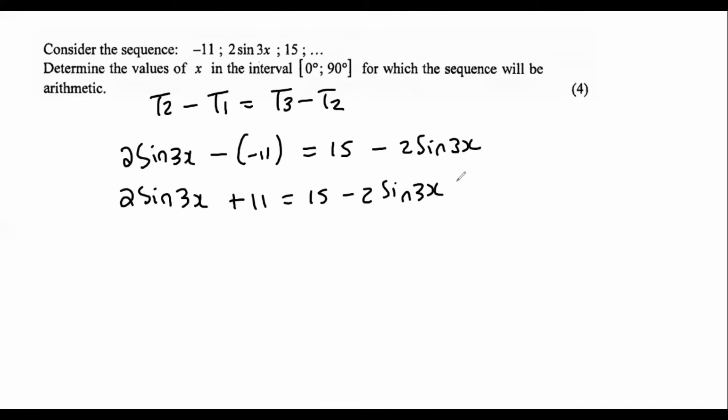Guys mustn't panic if you see something like this, just go with it. So what we can do is take the minus 2 sin 3x to the left and so that's going to become positive, so we're going to end up with 4 sin 3x. And then on the other side we're going to have 15 minus 11 which is 4.